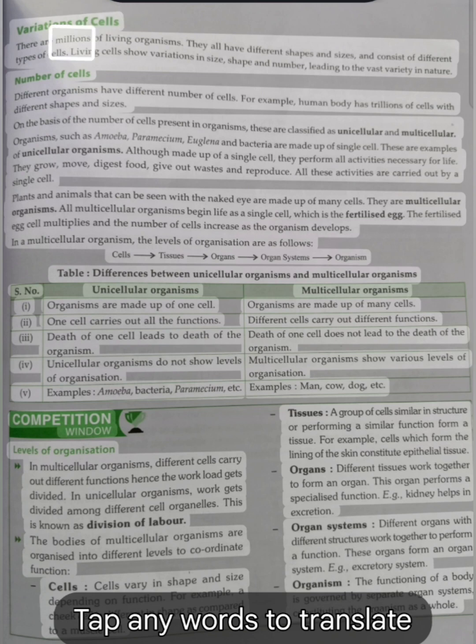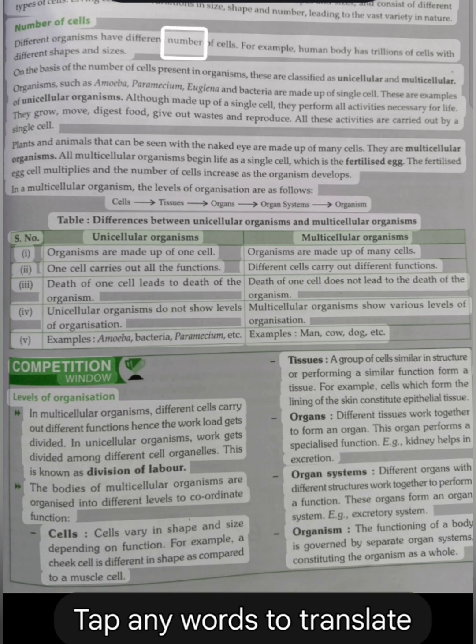Variations of cells. There are millions of living organisms. They all have different shapes and sizes and consist of different types of cells. Living cells show variations in size, shape and number, leading to the vast variety in life. Number of cells: Different organisms have different number of cells. For example, human body has trillions of cells with different shapes and sizes. On the basis of the number of cells present in organisms, these are classified as unicellular and multicellular.